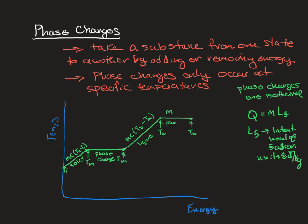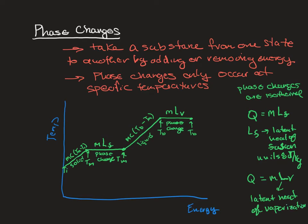Now we undergo another phase change — from a liquid to a gas — which involves a different latent heat. The formula is Q = m × LV, where LV is the latent heat of vaporization. Once the substance has completely changed phase, any energy added goes into raising the temperature of the gas. We use Q = mc(Tf − Tboiling), and again, the specific heat of steam is different from that of water and ice.